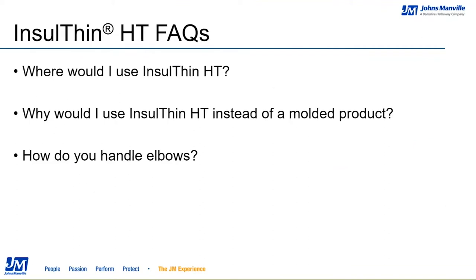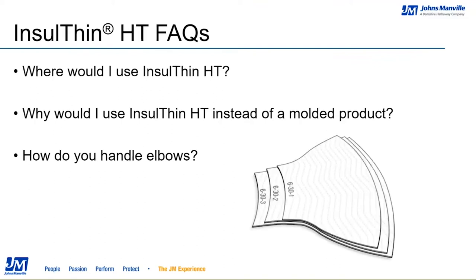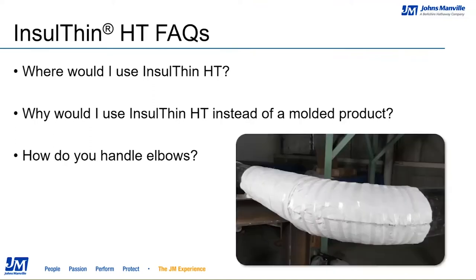Insultherm HT is also available in laser-cut pre-designed elbows for most standard pipe sizes. We make two-piece butterfly-type elbows in three layers — for example, for a six-inch iron pipe — providing a quick and easy installation.